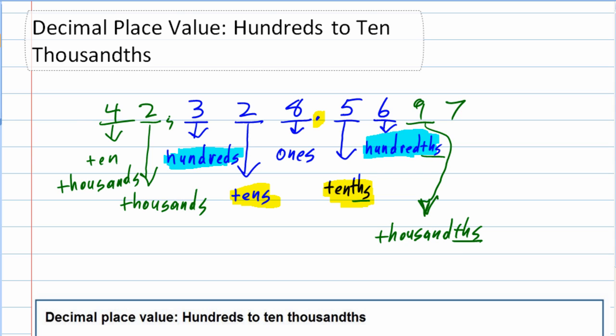If I break it down even further with the seven, the seven represents ten thousandths, being sure to include our THS. So we could break things down smaller and smaller, just as on the left-hand side of the decimal we could get bigger and bigger.